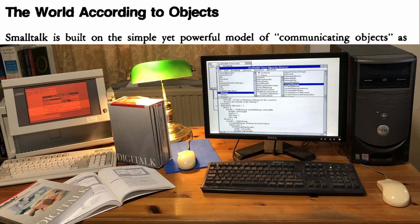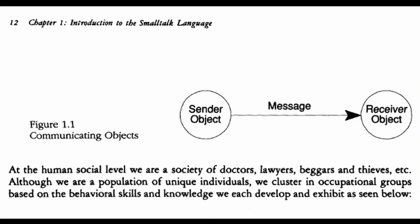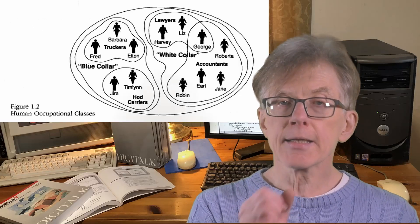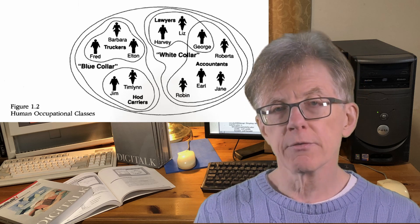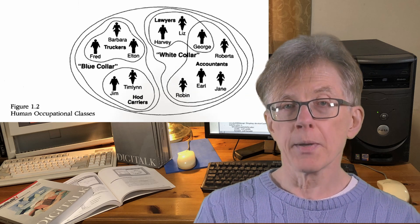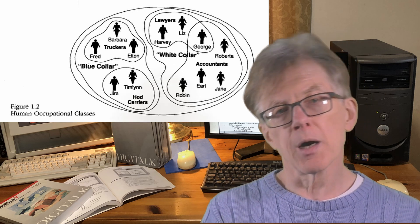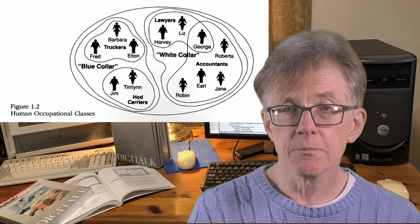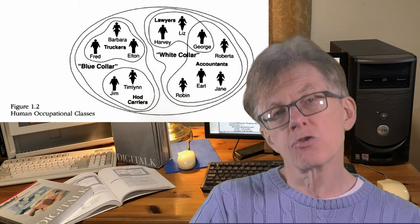Smalltalk is built on the simple yet powerful model of communicating objects. On the next page, there are a couple of diagrams to illustrate this — a sender object that passes a message, and a receiver object that receives that message. The next diagram uses a real-world example with human occupations shown as though they were a system of objects. Each occupation is seen as a class. To be a member of a trucker class, you would have to know how to drive a truck. Barbara, Fred, and Elton are all members of the trucker class — so in object-oriented terms, they are instances of that class, or we could say they are trucker objects.